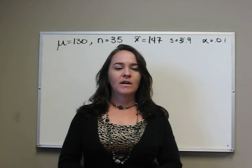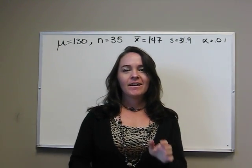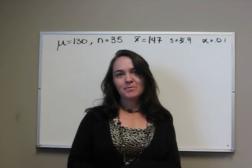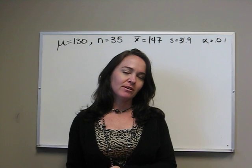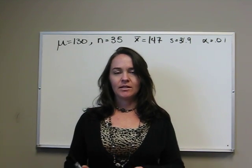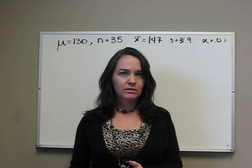This video is finding the hypothesis test for a population mean where sigma is unknown using the p-value approach. If sigma is unknown, then that rules out the z process.